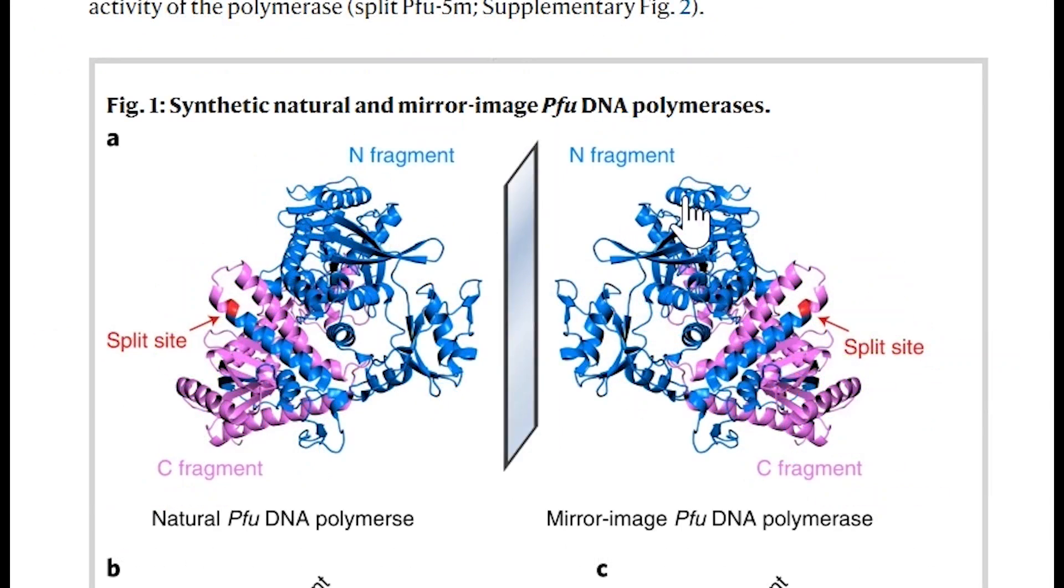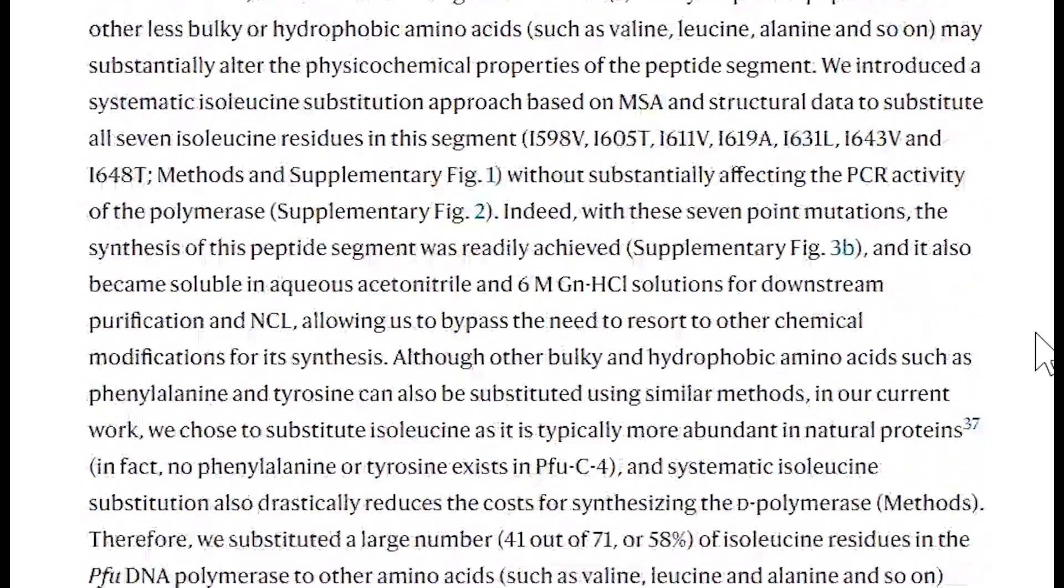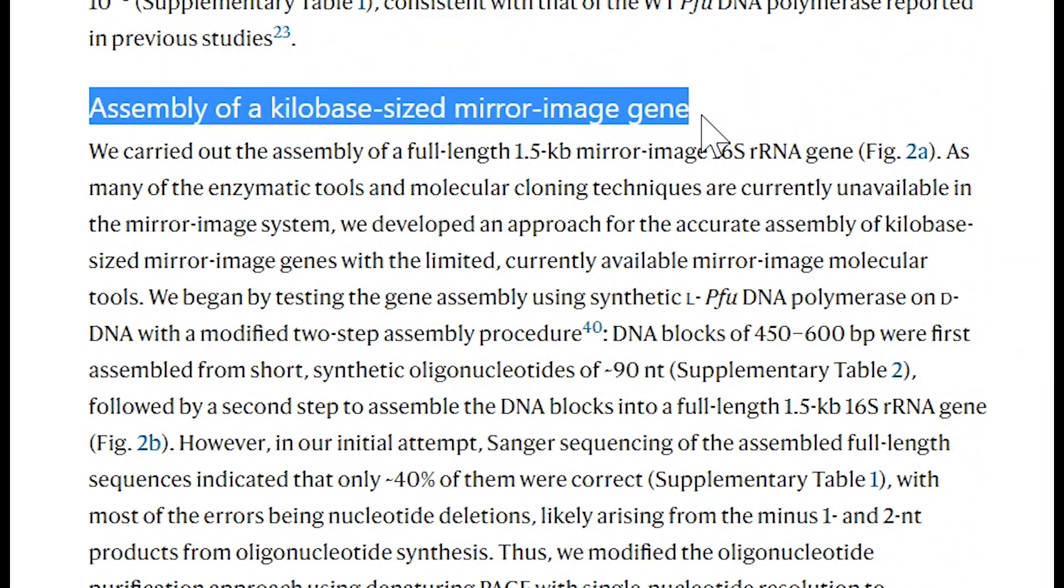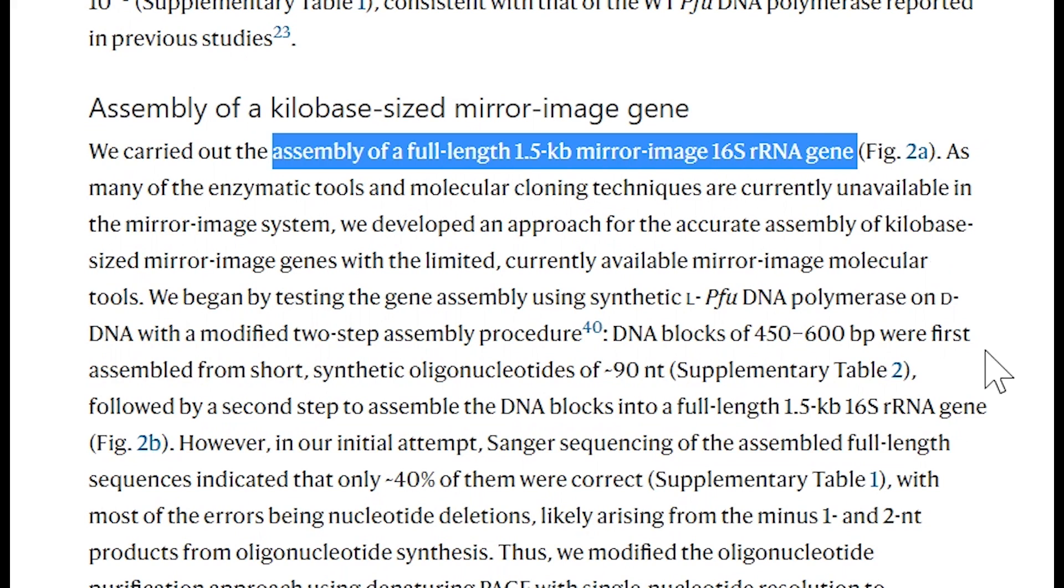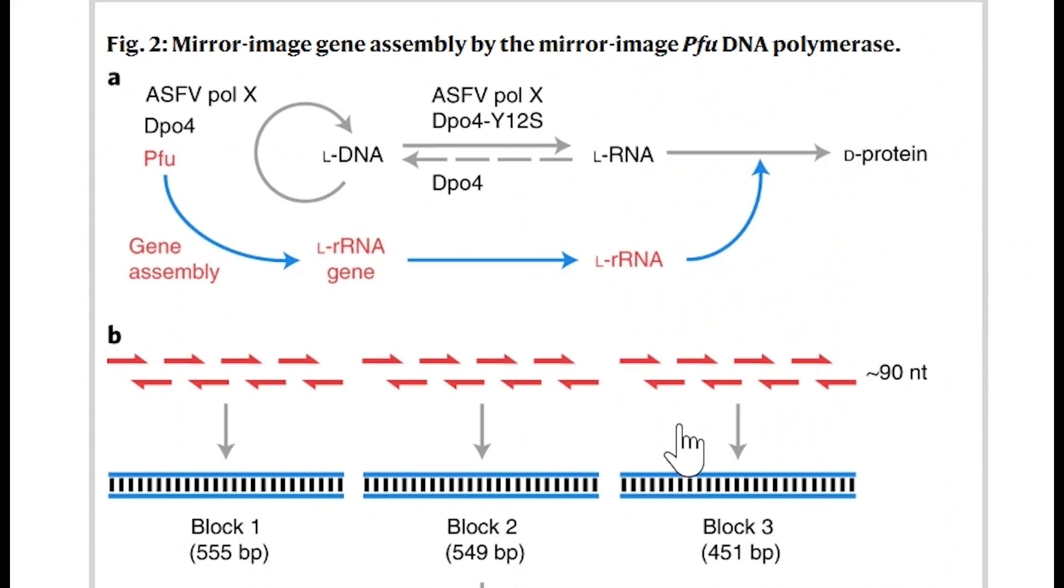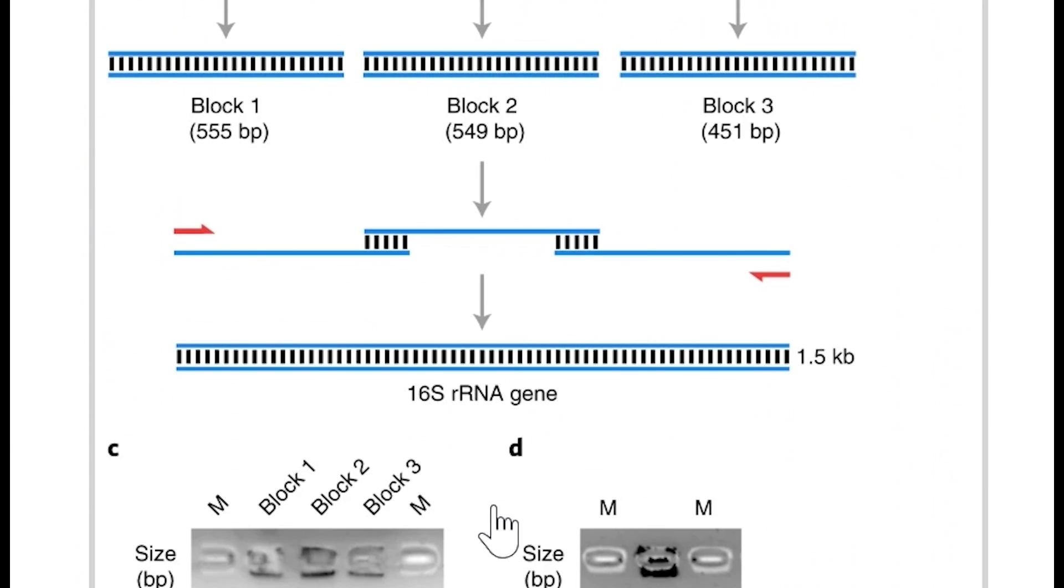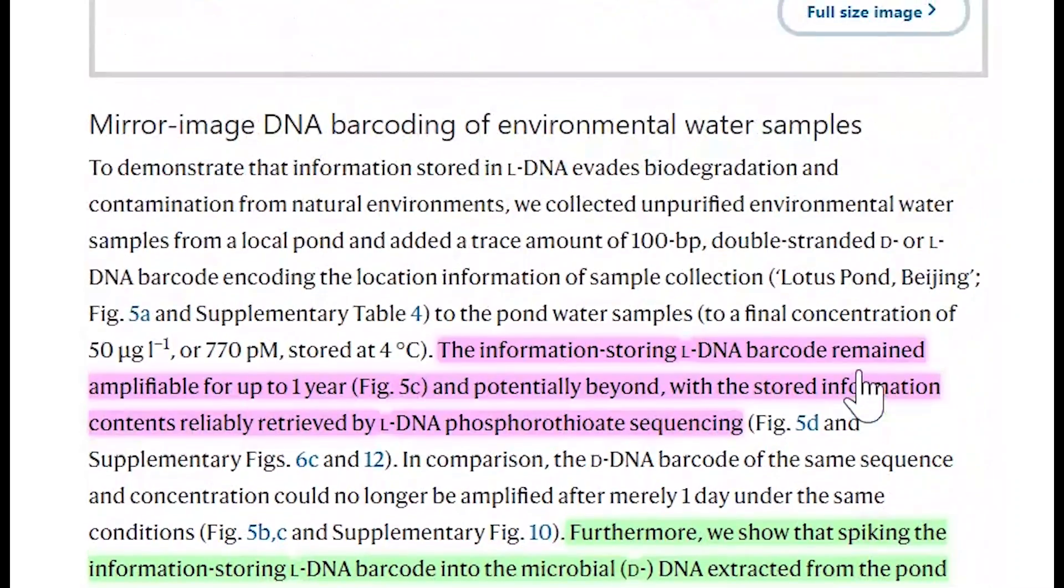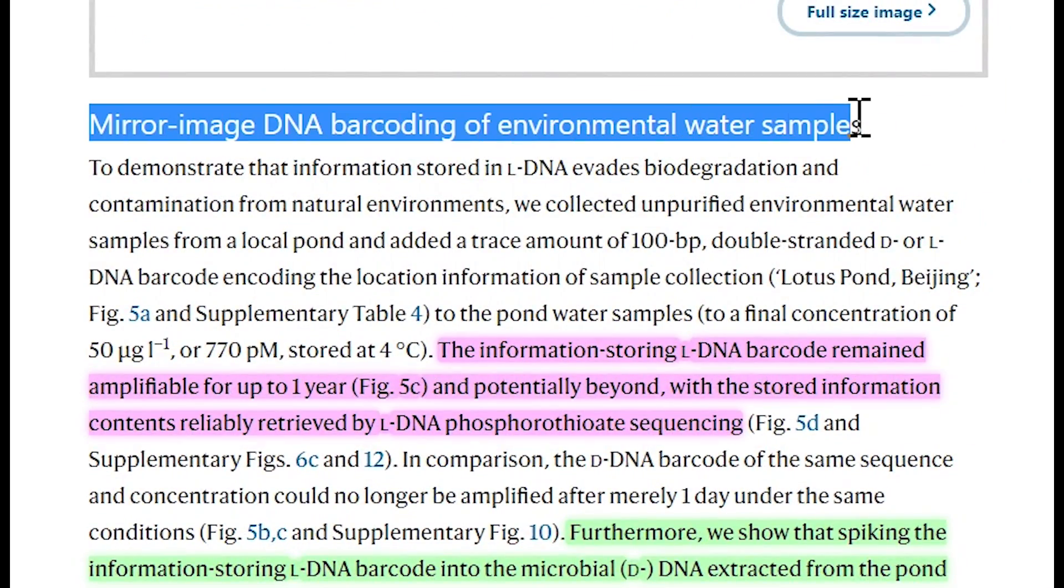Now, the interesting thing about this paper is what they then did with this polymerase. Firstly, they showed that with this mirror image polymerase, they could assemble the DNA gene encoding the 16S ribosomal RNA gene. And so this brings us closer to approaching potentially the reconstruction of the ribosome. More interestingly was the fact that they also used the system to show that it could work just as well as the normal system in DNA storage, if not better.